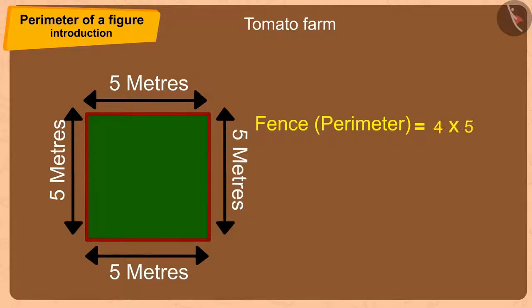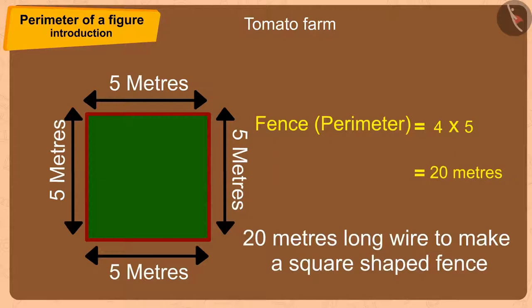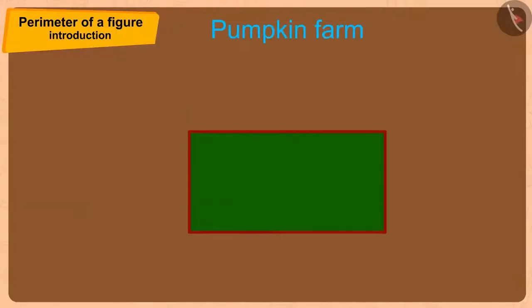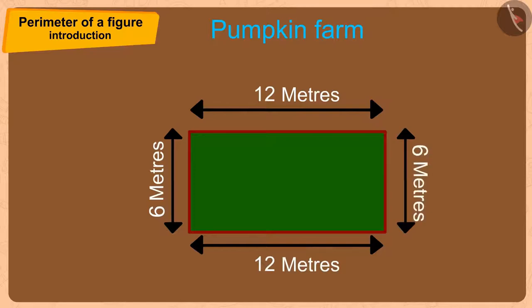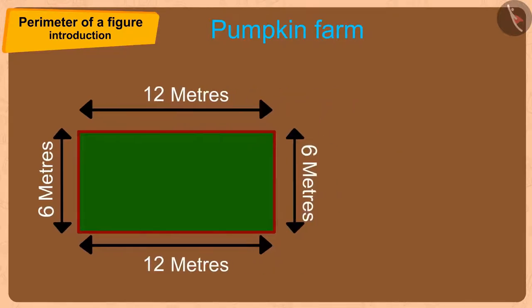In this way, Bhola used 4 times 5 or 20 meters long wire to make a square-shaped fence. The rectangle-shaped fence is 12 meters in length and the width is 6 meters. Every rectangle has two long edges and two wide edges. In this way, the size of this rectangular fence will be arrived at by adding 12 and 6 with 12 and 6 again. That is 36 meters.